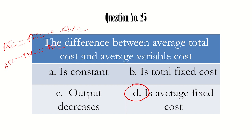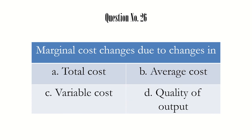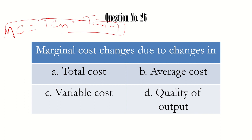Question number 26: marginal cost changes due to changes in which of the following? Recalling the formula — MC = TC(n) minus TC(n−1) — it is clear that marginal cost changes when there is a change in total cost. So the answer is option A: total cost.